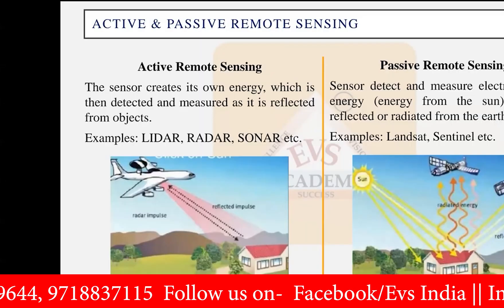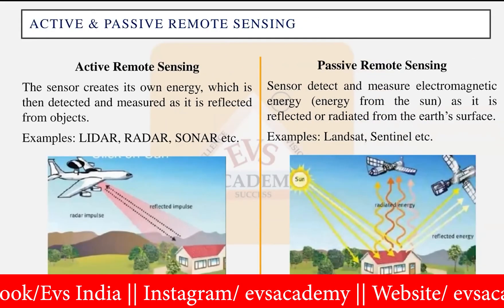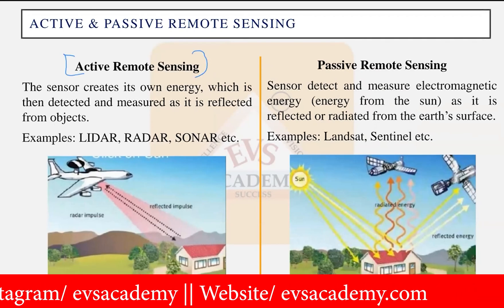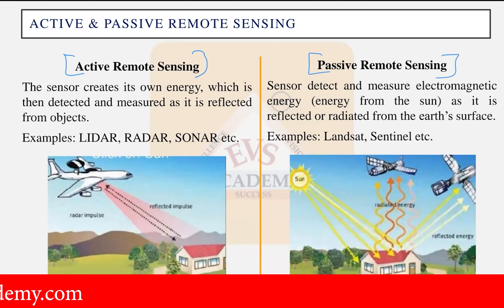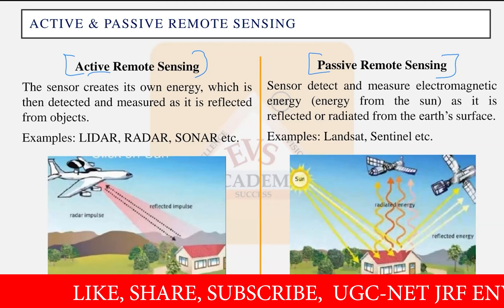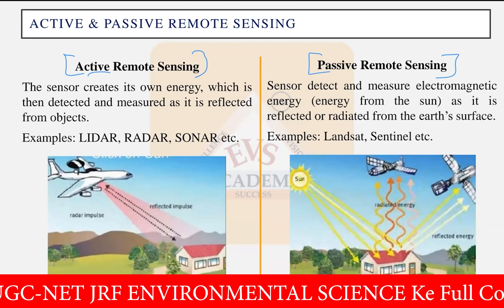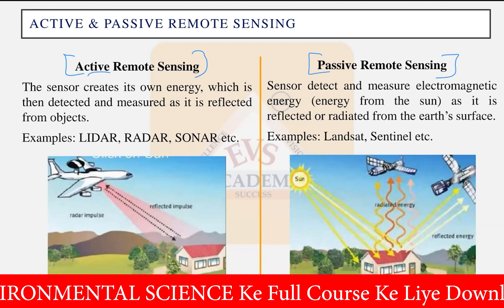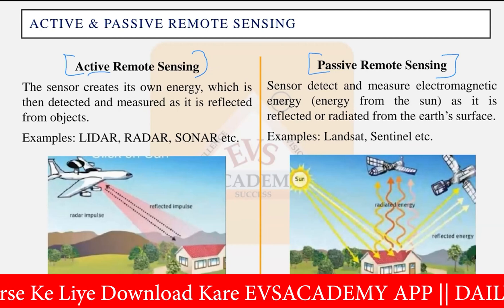Remote sensing is divided into two main types: active remote sensing and passive remote sensing. In active remote sensing, active instruments have their own source of energy and can generate their own electromagnetic radiation. That radiation goes down to the land surface, interacts with multiple objects, and then comes back.